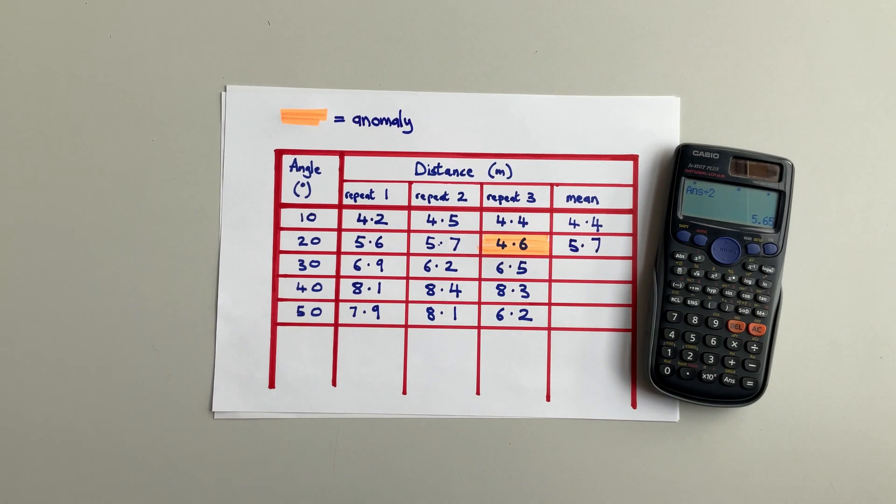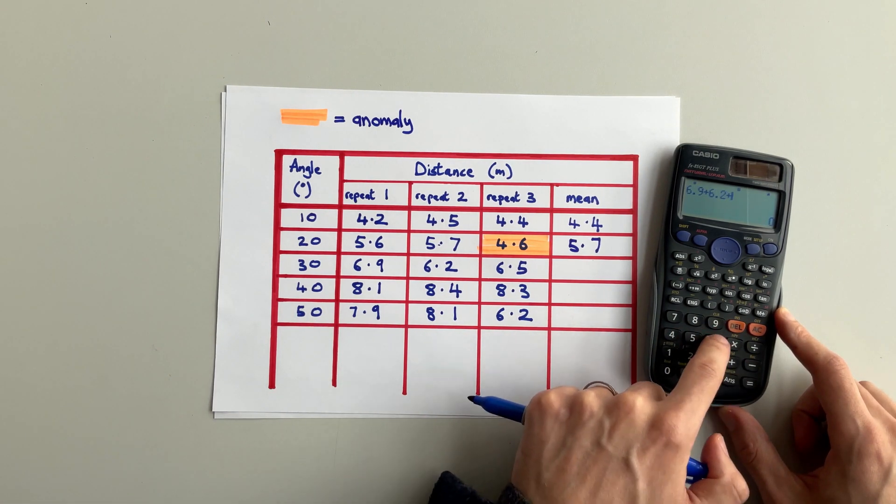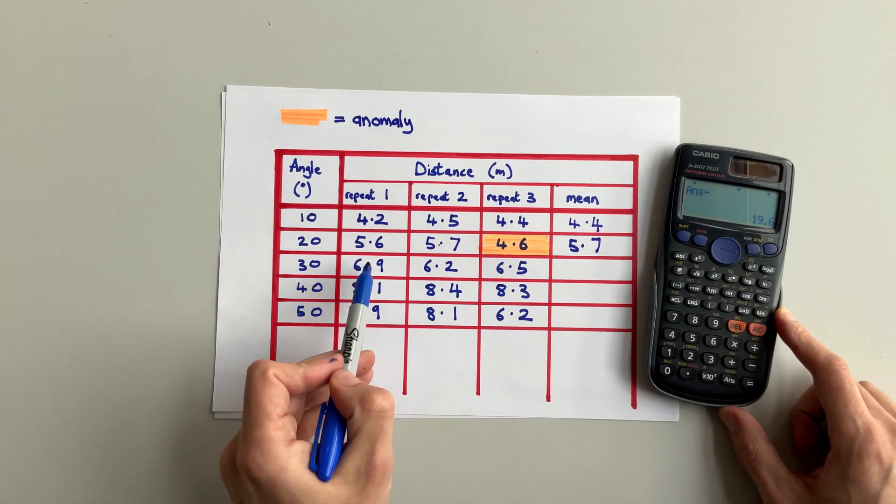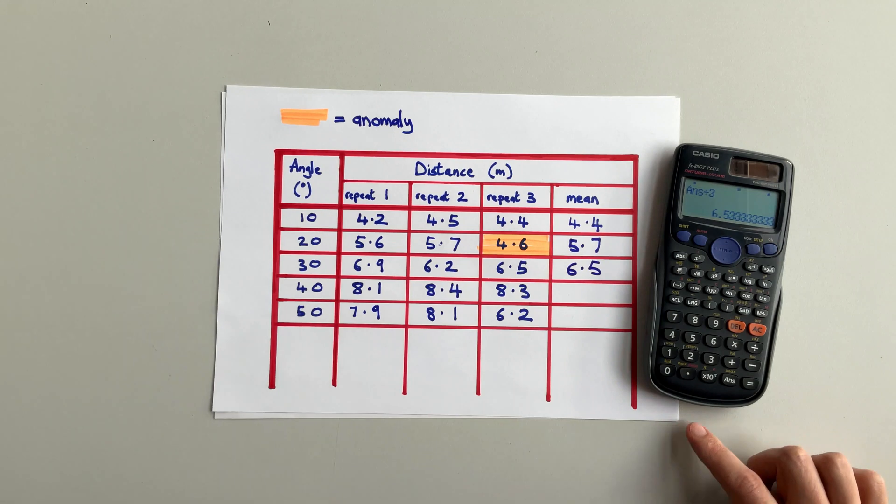When the angle was 30 degrees, all three numbers are quite far apart. So there isn't one that's particularly far from the other two. That means there's no anomaly and we add all three numbers together, push equals and divide by three.